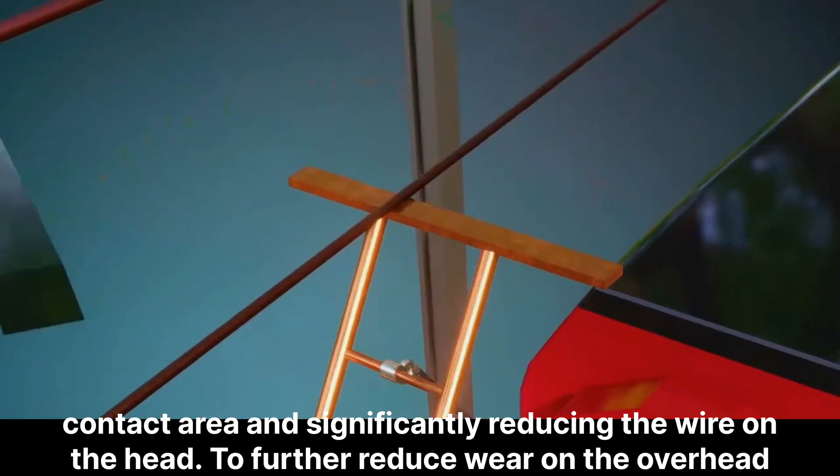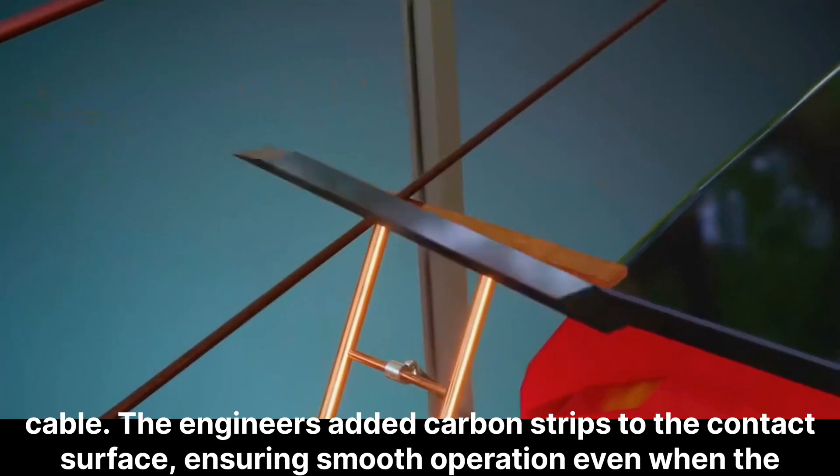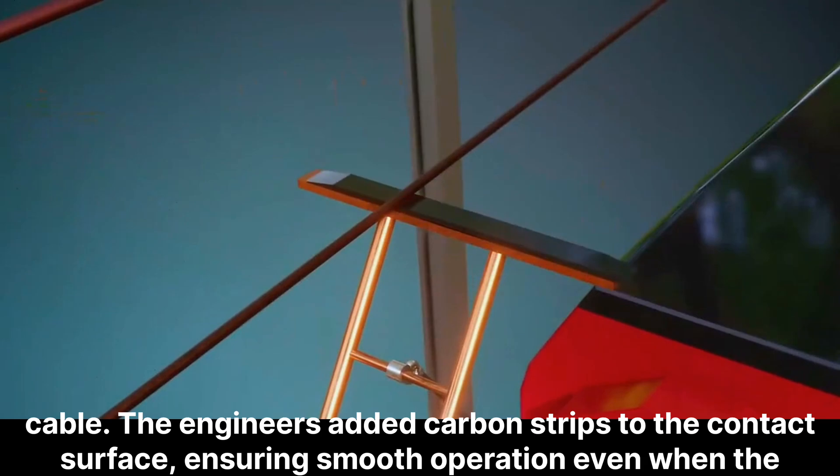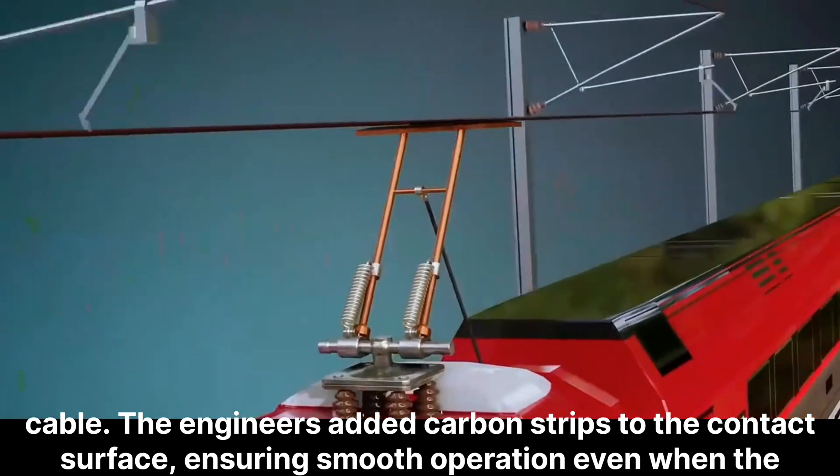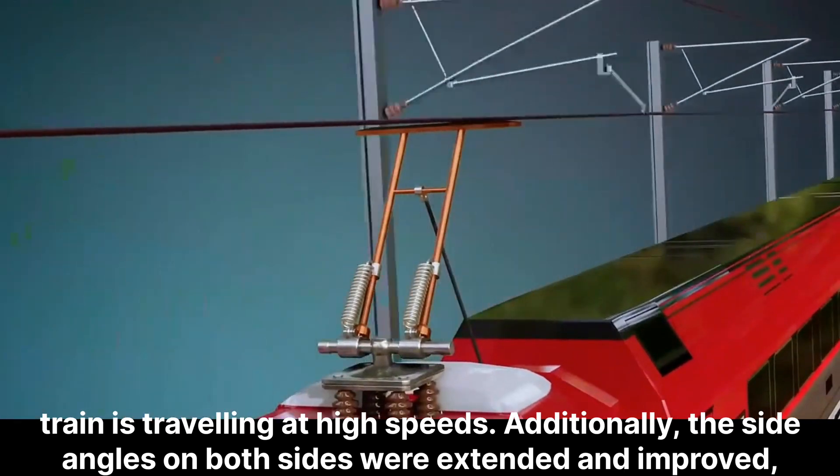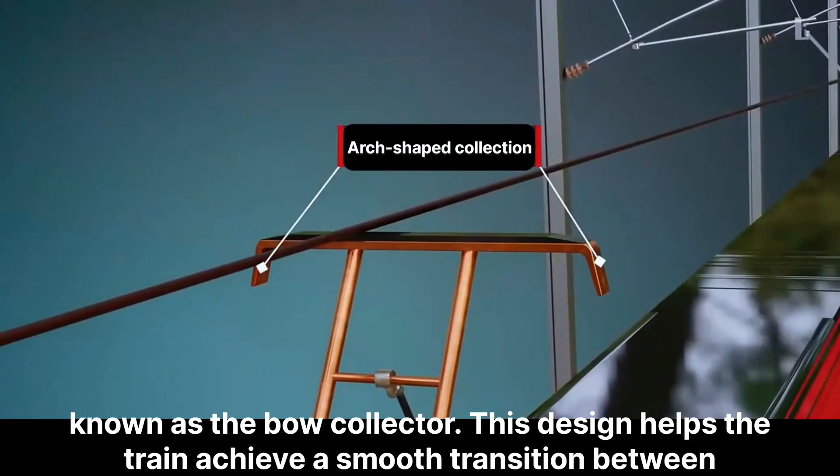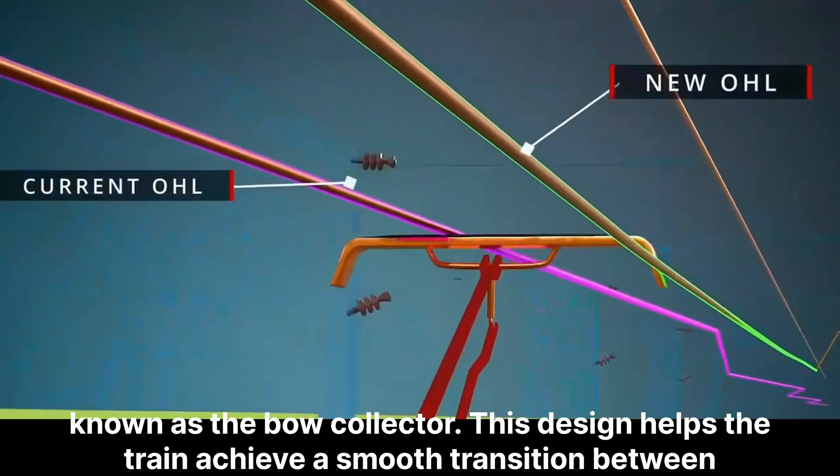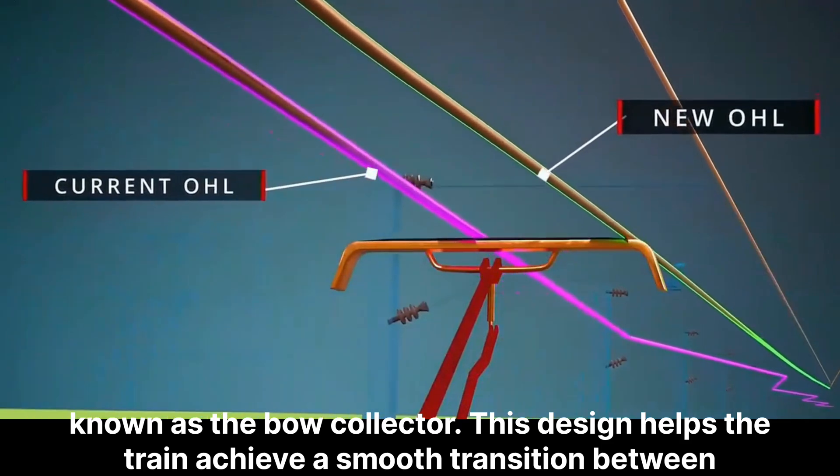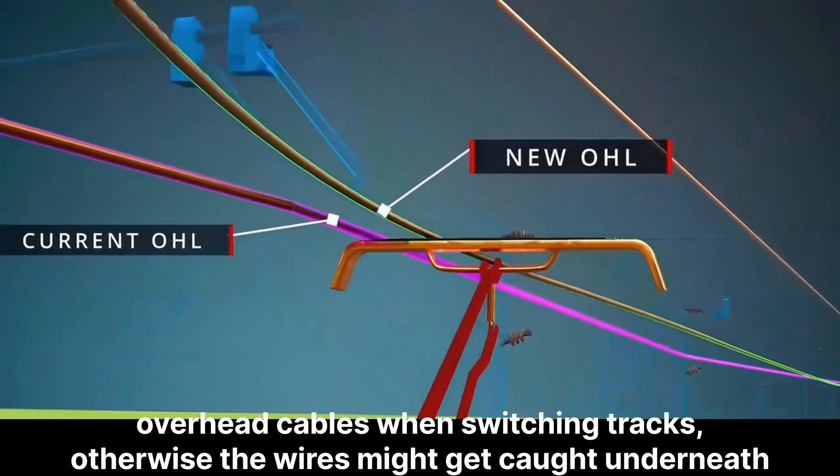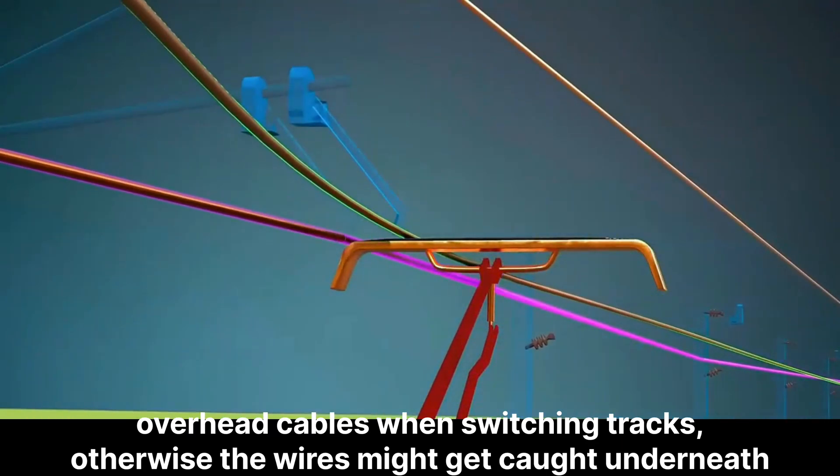To further reduce wear on the overhead cable, the engineers added carbon strips to the contact surface, ensuring smooth operation even when the train is traveling at high speeds. Additionally, the side angles on both sides were extended and improved, known as the bow collector. This design helps the train achieve a smooth transition between overhead cables when switching tracks, otherwise the wires might get caught underneath the collector head.